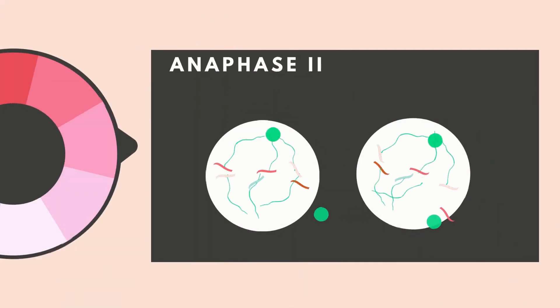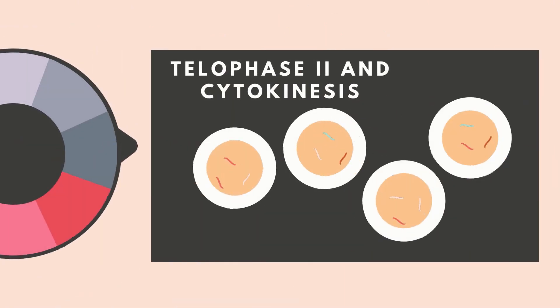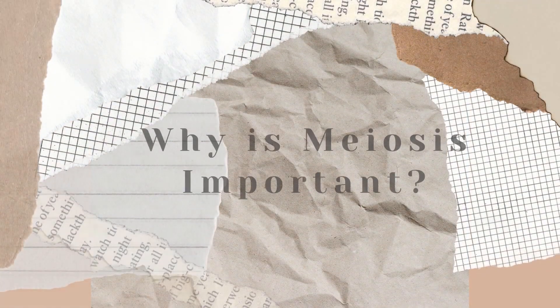Next is Anaphase II, where spindle fibers contract and separate the sister chromatids — now called chromosomes — and move them to the opposite poles. The last phase is Telophase II, then cytokinesis follows. The chromosomes decondense, the nuclear membrane reforms, and the cell divides to form four haploid daughter cells.